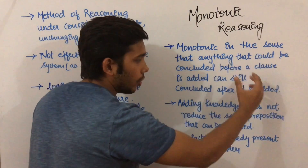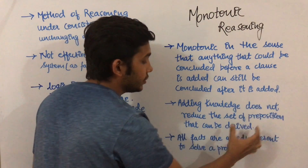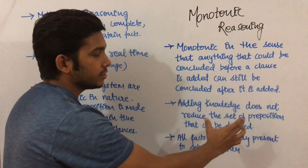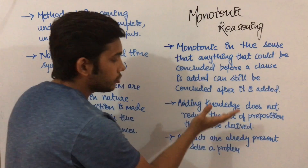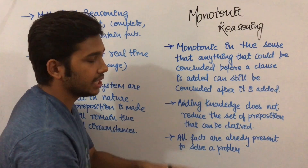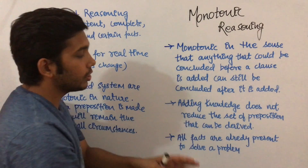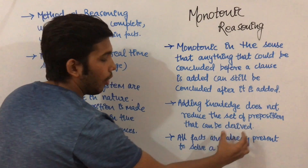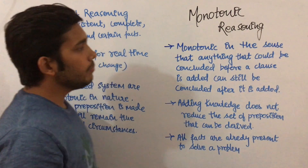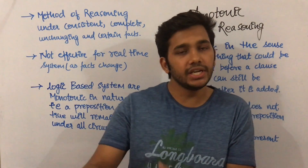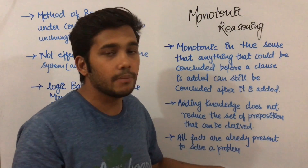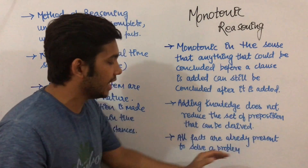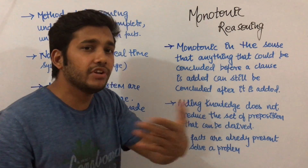Adding knowledge in monotonic reasoning does not reduce the set of propositions that can be derived. From the example, the first clause was Tarun Kumar got placed in Kent Aro, and this will not be going to change if another clause is added. You can also say all facts are already present to solve a problem in monotonic reasoning — if we add new clauses they give us more information, but the problem could already be solved without them.